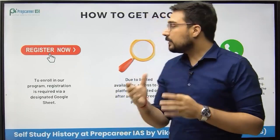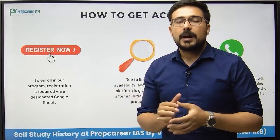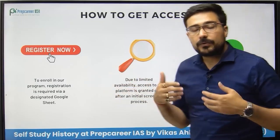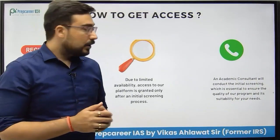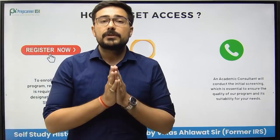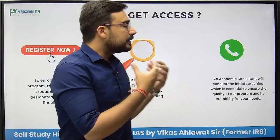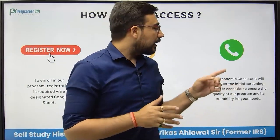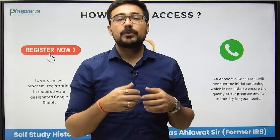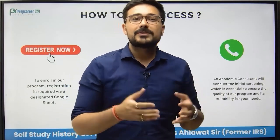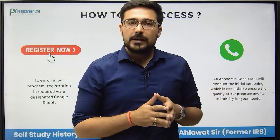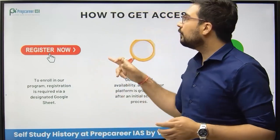What you need to do: first, register on the specific Google Sheet provided. You will receive a call — this is the screening process. Because the number of students we can help is always limited, an academy counsellor will call you to understand your requirement — whether you are in first, second, or third year of college, or have already prepared for some time without desired results. Based on this screening, you will get the benefit of this program.